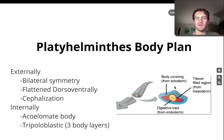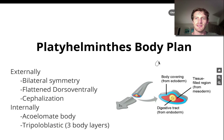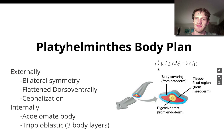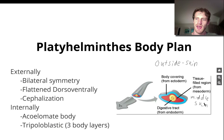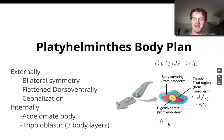They're also triploblastic, which means that there are three different body layers. The first body layer we would encounter coming in from the outside would be called the ectoderm — 'ecto' means outside, and 'derm' means skin, so this is our outside skin. Next we have the mesoderm, our middle skin. And finally we have what we call the endoderm, which is the inside skin.